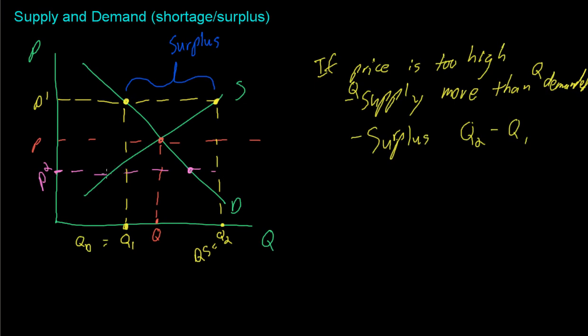And the shortage is when we have too much is demanded, so we'll call this Q3, and too little is supplied, so we'll call this Q4. So if price was too high, then you supply more than you're demanded, and you have a surplus.